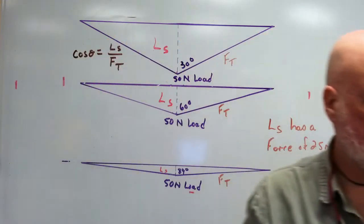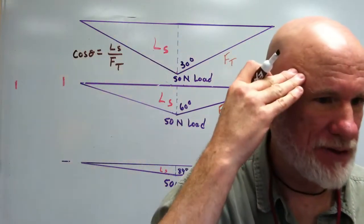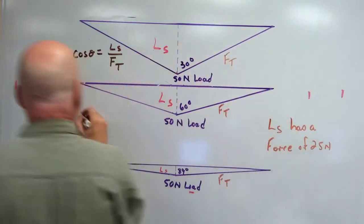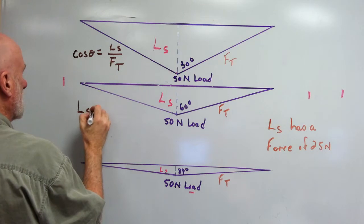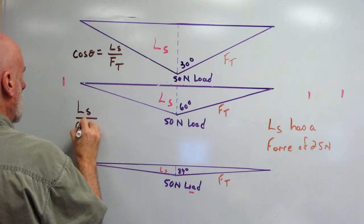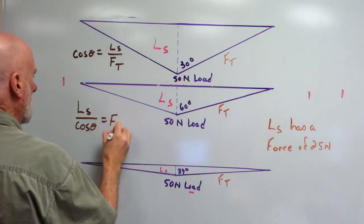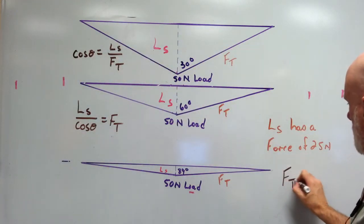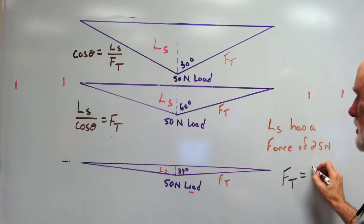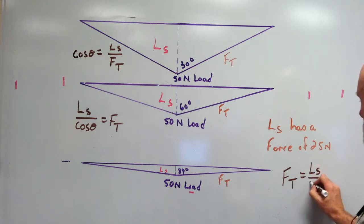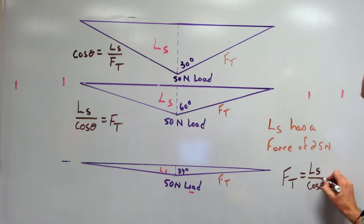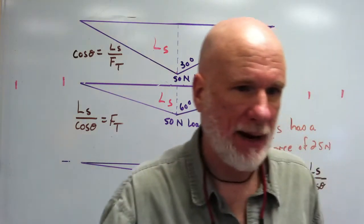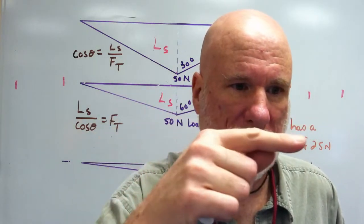L S over F T. Now, we're looking for F T, so if you solve for F T it's going to be L S over cosine theta equals F T. So we're going to write: F T equals L S divided by cosine theta. Does that make sense? I'm going to move the camera over a little bit.